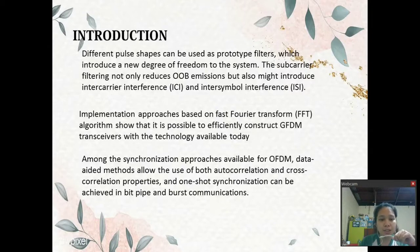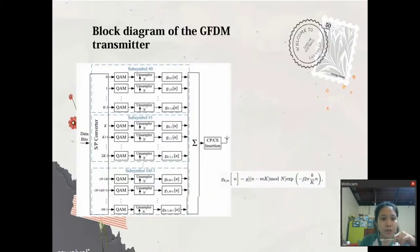Implementation approach based on fast Fourier transform or FFT algorithm shows that it is possible to efficiently construct GFDM transceivers with the technology available today. Among the synchronization approaches available for OFDM, the data methods allow the use of both autocorrelation and cross-correlation properties and one-shot synchronization can be achieved in bit, pipe, and burst communication.